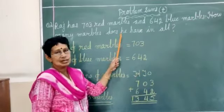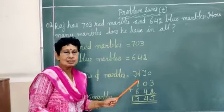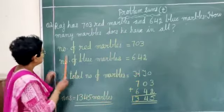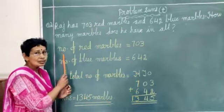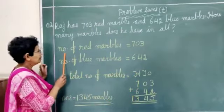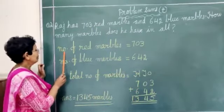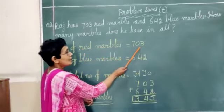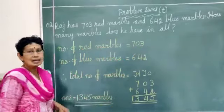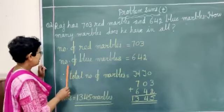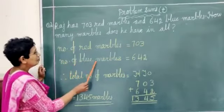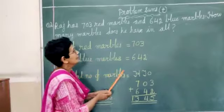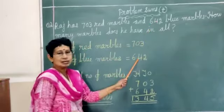After the question, leave one line empty. The next line we will write 'No.' - the meaning is number. This is short form of number. Number of red marbles, how many are there? 703. Again leave one line empty. Next line, number of blue marbles, how many are there? 642.